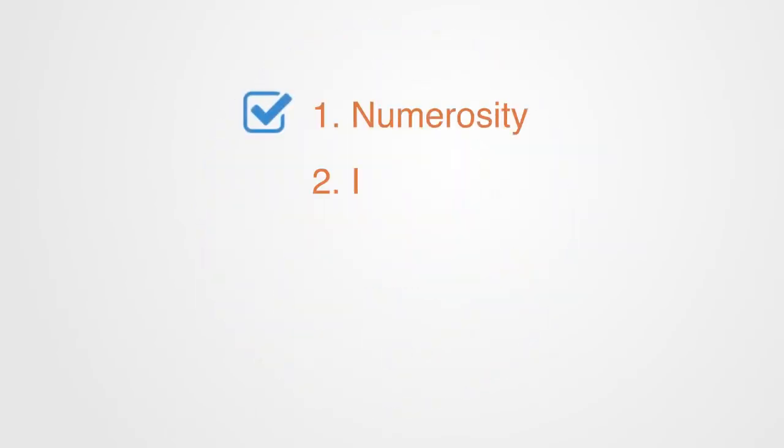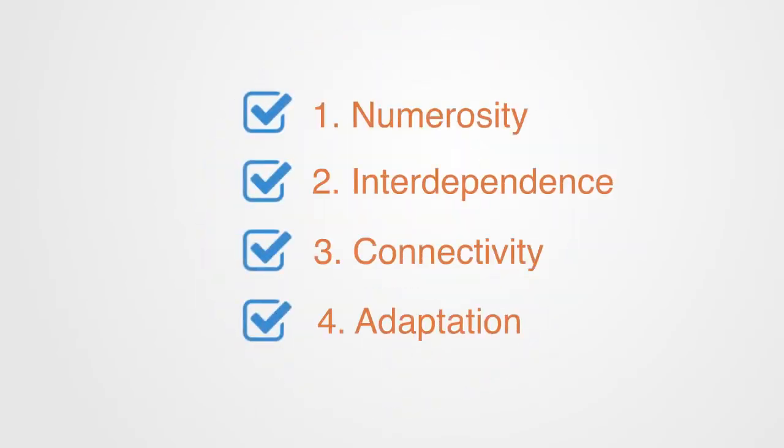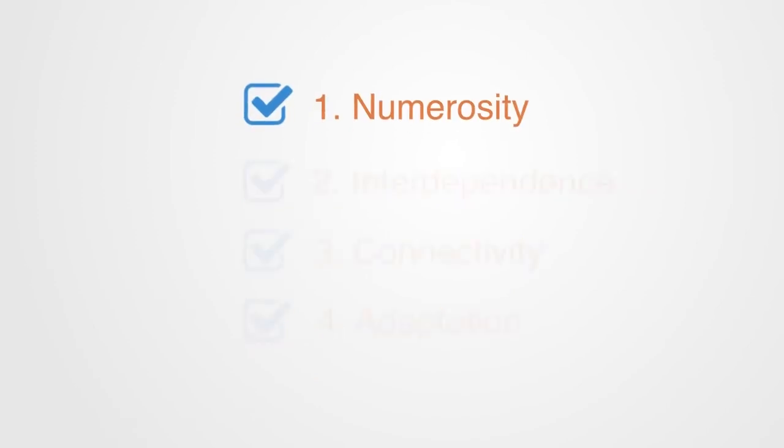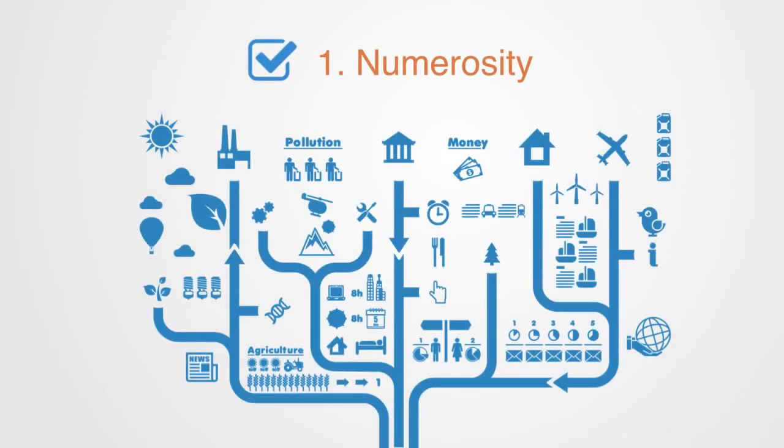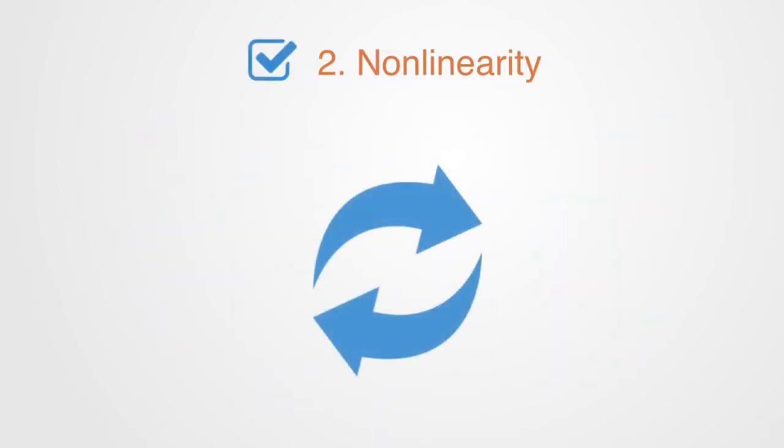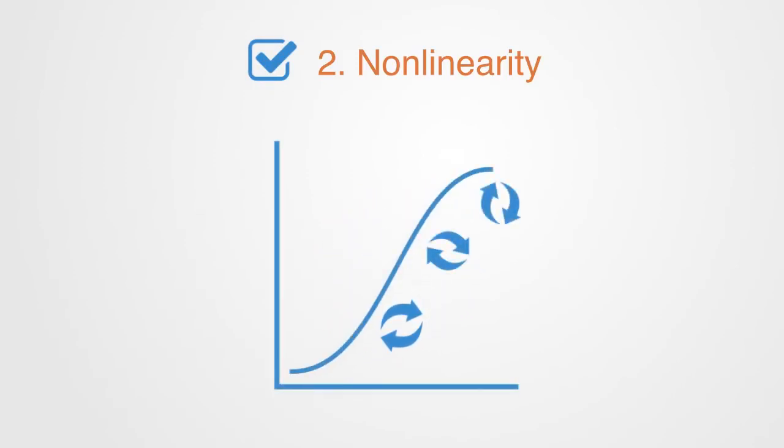We then began to add complexity to our model of a system by defining it as a product of four primary parameters. Firstly, talking about the number of elements and different levels to the hierarchy within our system. We then discussed nonlinearity as another dimension to complexity, where non-additive interactions and feedback loops over time can give us exponential relations between the input and output to a system and lead to phase transitions.